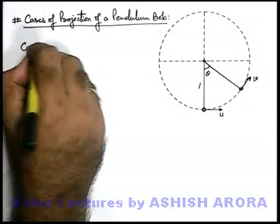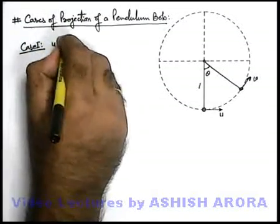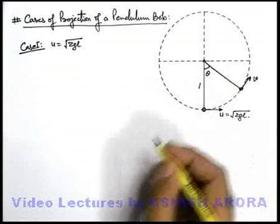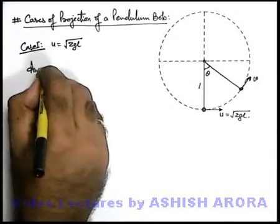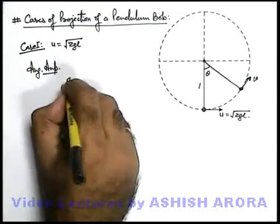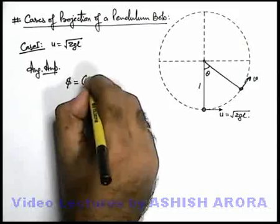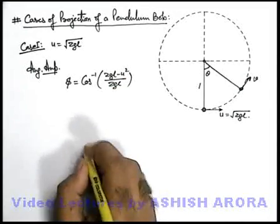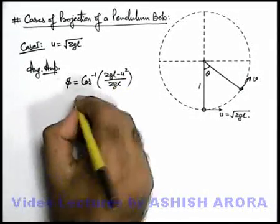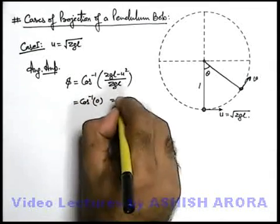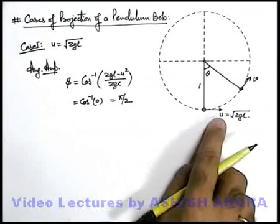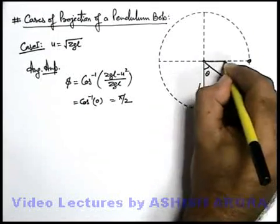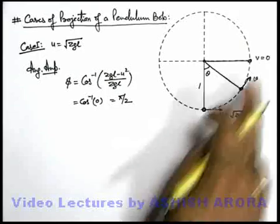Case 1: we consider if the initial speed of projection is √(2gl). If we throw the bob with initial speed √(2gl), we find the angular amplitude of motion. The angular amplitude φ is given by cos⁻¹[(2gl − u²) / (2gl)]. Substituting u = √(2gl), we get cos⁻¹(0) which equals π/2. That means if the bob is thrown at speed √(2gl), it carries the bob to the position where the string becomes horizontal. Here the final velocity of the bob becomes zero and then it returns.